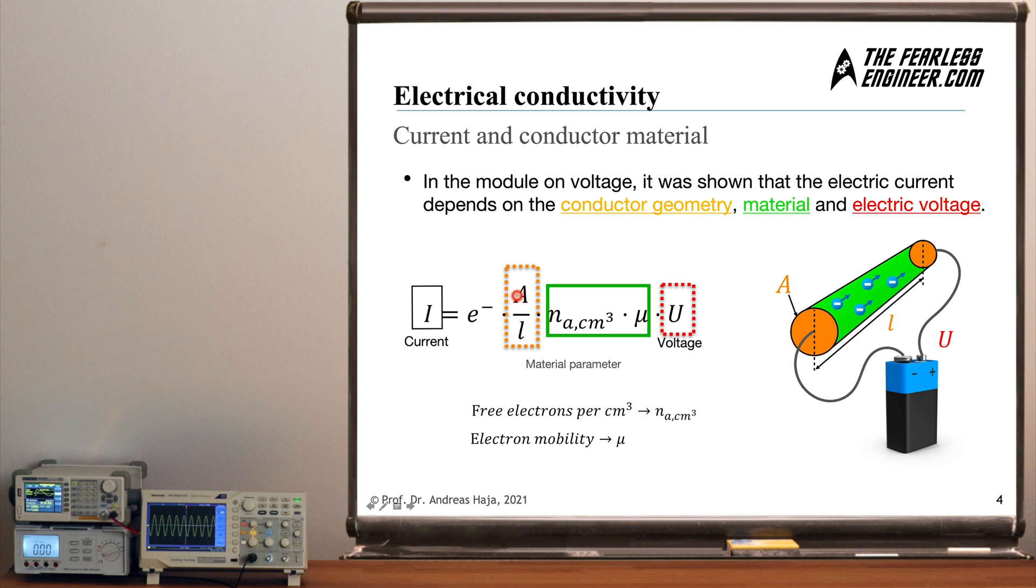The first is associated to the geometry of the conductor which is represented by its surface area, the diameter of the cable you can see here on the right, and also the length of this body here. And we have the electrons moving through the conductor driven by the electric field over the length L, and the energy which is transferred to them is taken from the electric field generated by this battery here. And in the green box we have the material dependent parameters which are the number of electrons in a cubic centimeter of the respective material, for example copper, and also this parameter here is the electron mobility.